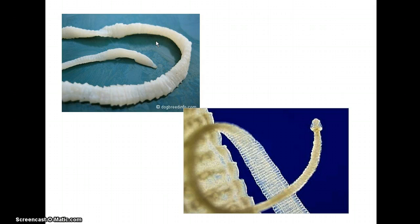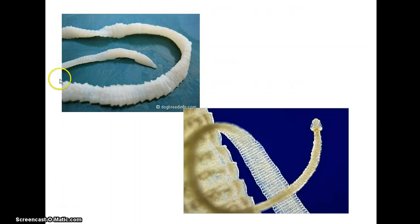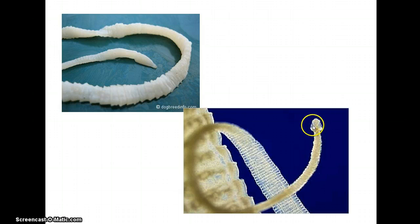This slide shows the scolex, with immature proglottids much smaller at the neck region starting to get bigger, and then some more mature proglottids. Over on the right, same thing — you can see the scolex with its suckers and hooks, the holdfast organs, and immature proglottids. Even in this part of the photograph, they're still pretty immature — each section is still fairly small.